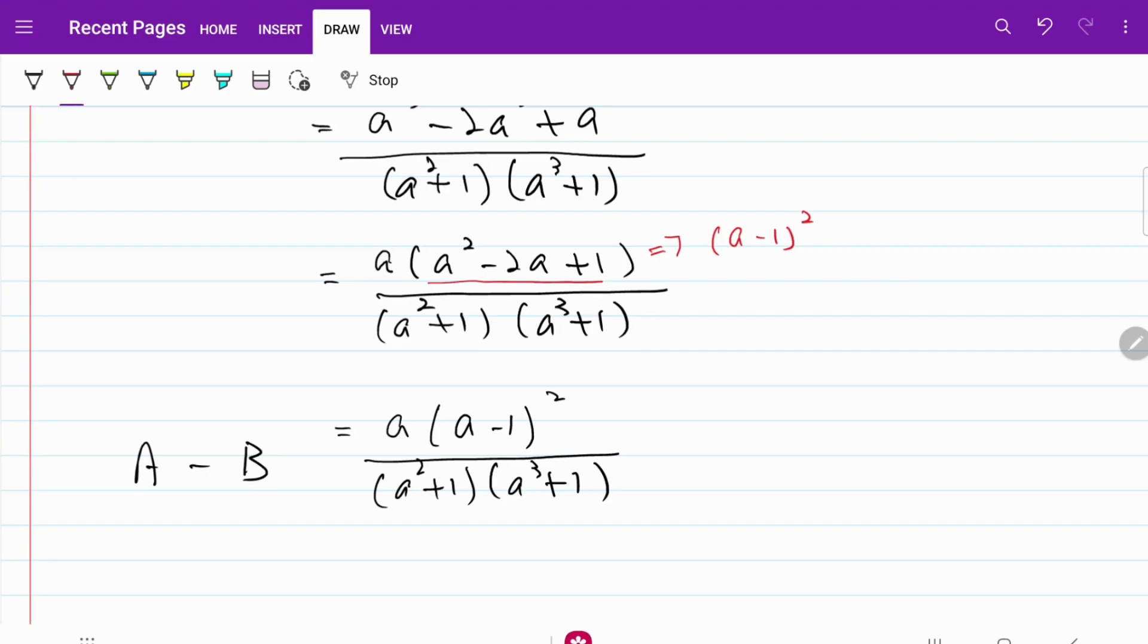But if we compare each of the components on both the numerator and the denominator, we can safely say that a squared plus 1 is bigger than 0 and a cubed plus 1 is bigger than 0. For the numerator, we have the same thing where a is bigger than 0 and this component right here is bigger than 0 as well.